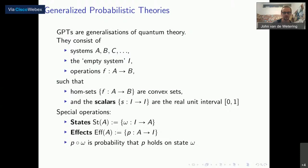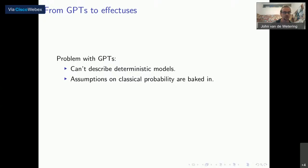There are a couple of problems with GPTs which motivate us to generalize. Namely, GPTs really describe deterministic models — of course you could put deterministic stuff in there, but you have probabilities on the outside, a convex, probabilistic structure that's just there. And secondly, if you want to use GPTs as generalizations of quantum theory, you always have this classical probabilistic interface; you can't change these real numbers in the model. So if you want to go more general, you need to use something else.